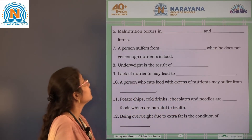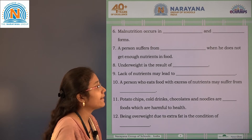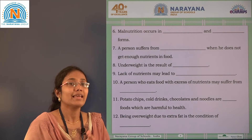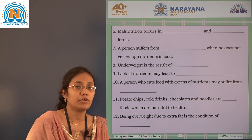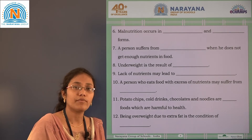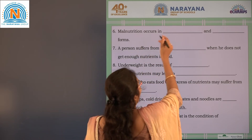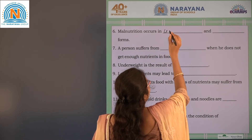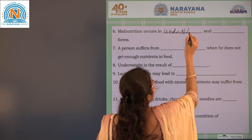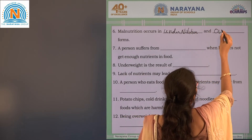Now the sixth blank: malnutrition occurs in two forms. If we are taking less amount of nutrients, a person may suffer from undernutrition. If taking excess nutrients, the person may suffer from overnutrition. So malnutrition occurs in undernutrition and overnutrition forms.